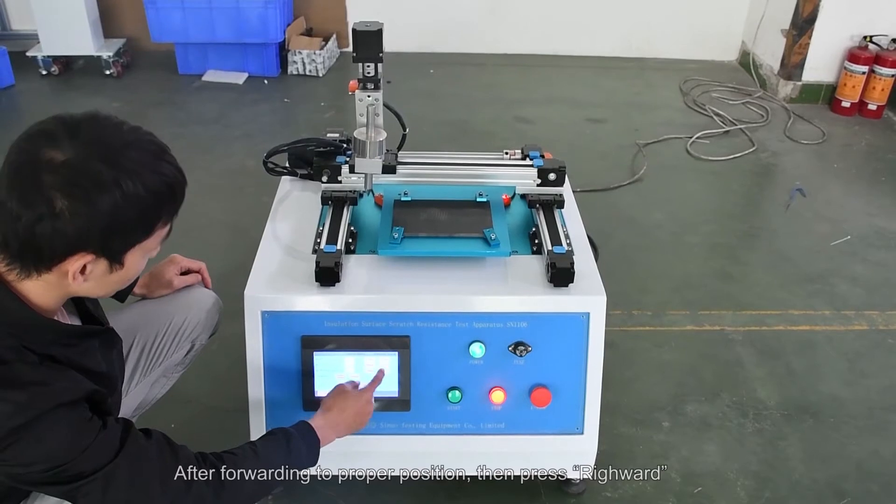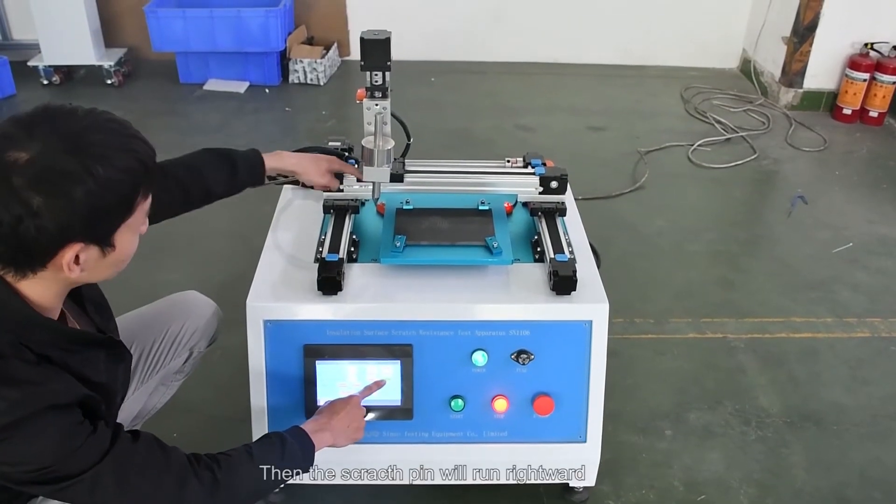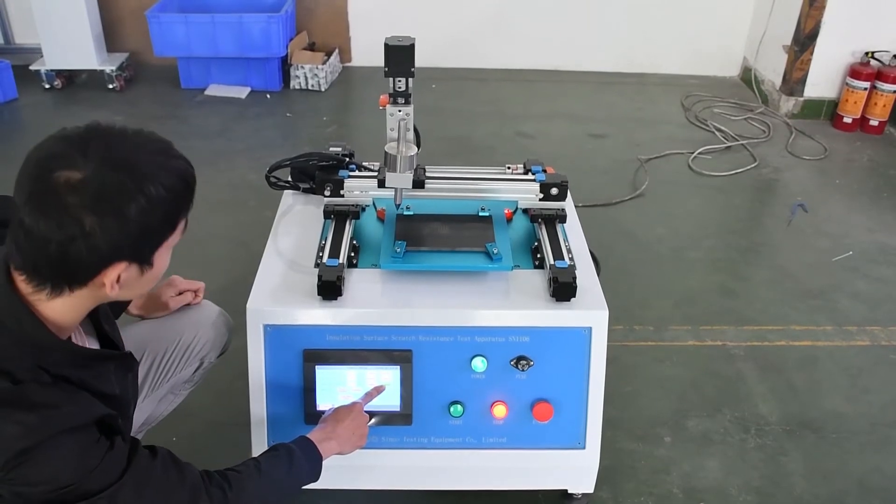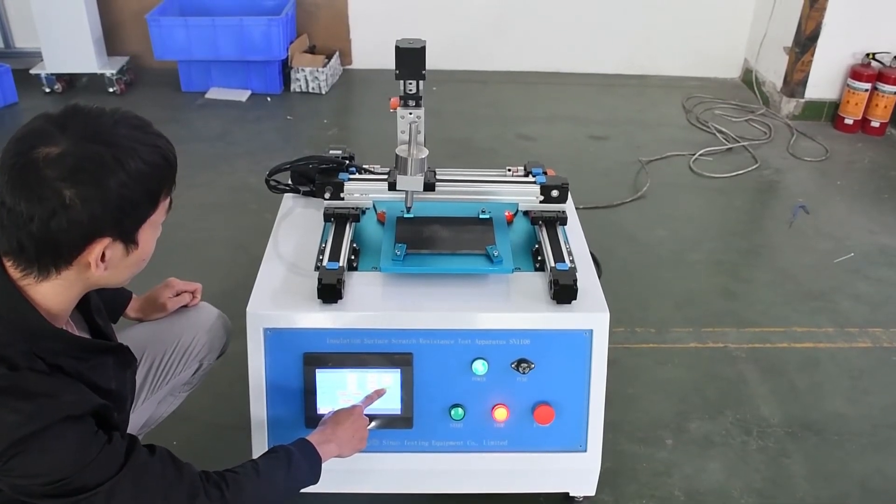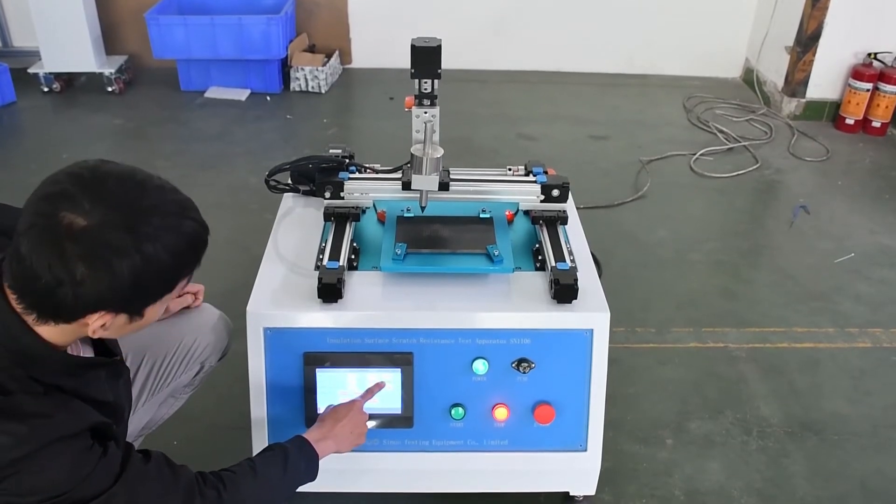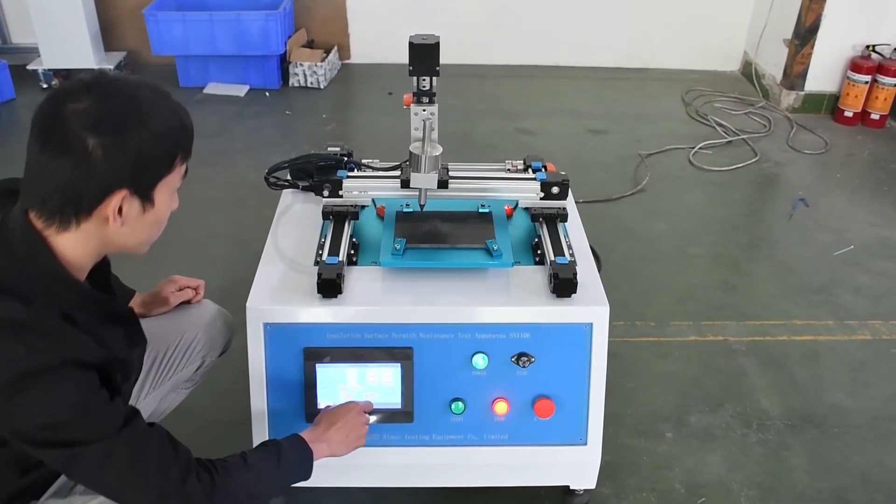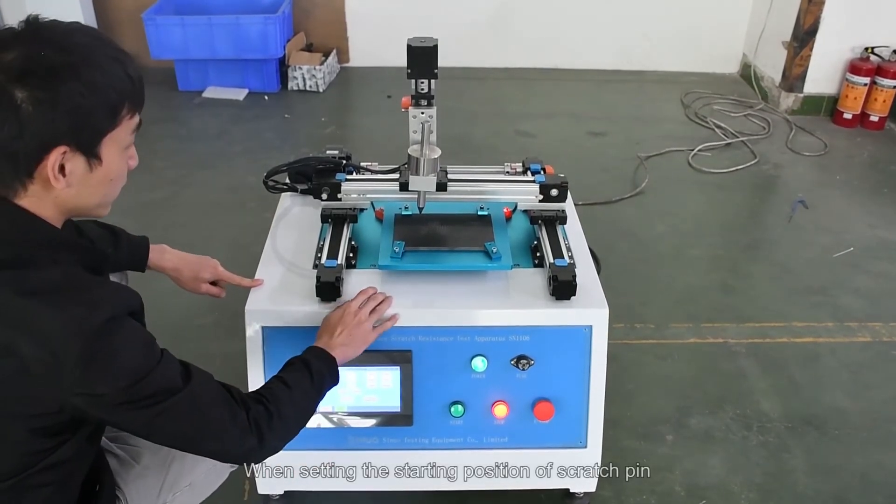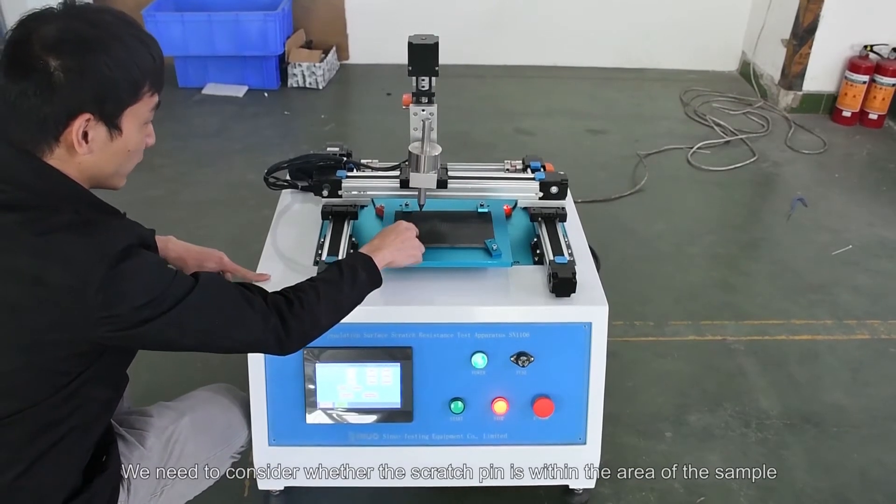After forwarding to proper position, then press rightward, then the scratch pin will run right. When setting the starting position of scratch pin, we need to consider whether the scratch pin is within the area of the sample.